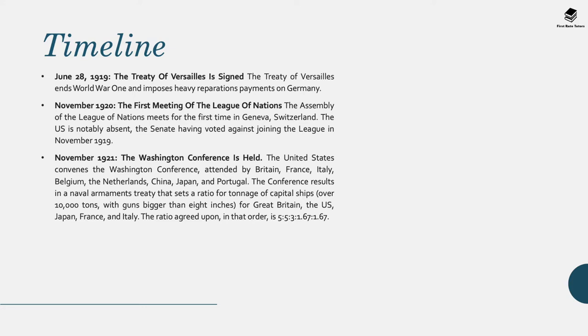To sum up the interwar period, here is a timeline of key dates. In 1919, the Treaty of Versailles was signed, ending the First World War. In 1920, there was the first meeting of the League of Nations. In 1921, the Washington Conference was held, convened by the US and attended by Britain, France, Italy, Belgium, the Netherlands, China, Japan and Portugal; it resulted in a naval armaments treaty setting a ratio for tonnage of capital ships for Britain, the US, Japan, France and Italy. In 1922, Benito Mussolini was made Italian Premier. In 1924, Vladimir Lenin died; he was a key figure of the Bolshevik Revolution and was succeeded by Joseph Stalin, who beat Trotsky and controlled the Soviet government for many years.